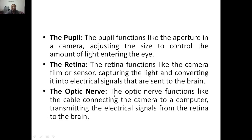Next is the optic nerve. The optic nerve functions like a cable connecting the camera to the computer. If we want to transfer data to a computer to view the image, we need a cable. Similarly, this particular optic nerve functions like connecting the camera to the computer — here it connects to the brain. From the retina, the optic nerve will be connected to the brain. This optic nerve transmits the electrical signals from the retina to the brain. So you get a light, that light is focused to your retina, the retina converts this light into an image and then into electrical signals, and those signals need to be sent to the brain — for that we need the optic nerve.